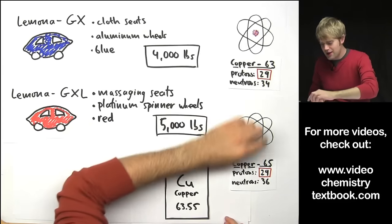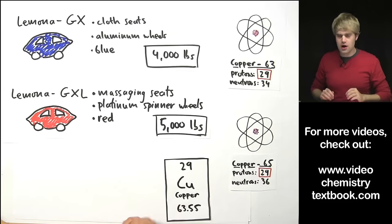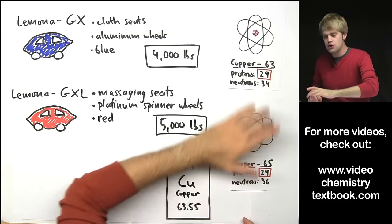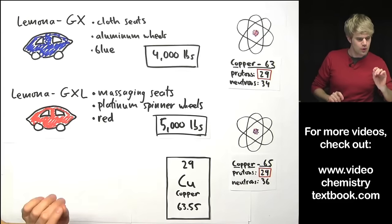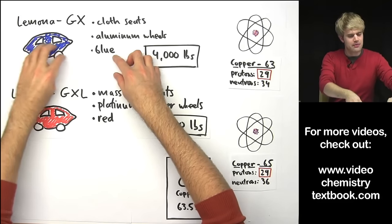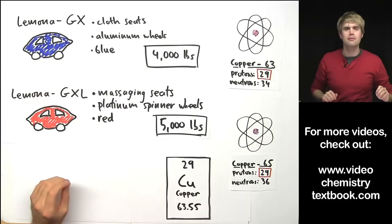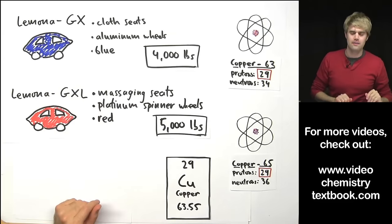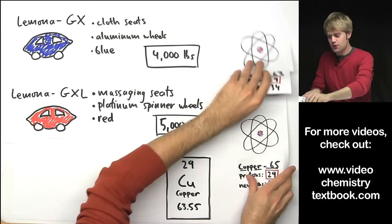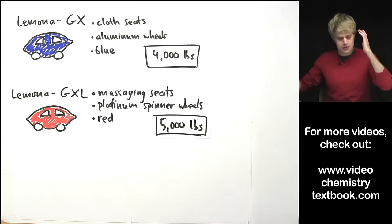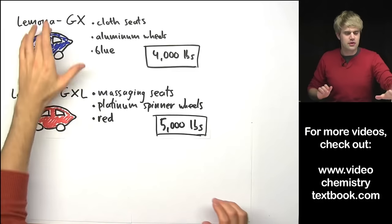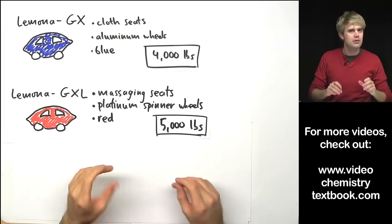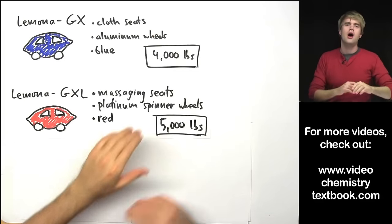So just as long as you have 29 protons it makes you copper. However, it doesn't matter how many neutrons you have just the way that if you have the shape of a lemon the car is a Lamona and it doesn't matter what other features come in that car. This is all we're going to talk about with isotopes for right now but just keep this in the back of your mind that the models of a car are very similar to isotopes of an element.